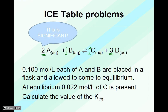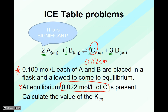Here's our question: 0.100 moles per liter each of A and B are placed in a flask and allowed to come to equilibrium. At equilibrium, we have 0.022 moles per liter of species C. The question is asking us to calculate the value of the equilibrium constant.